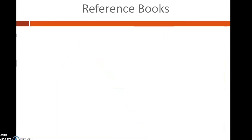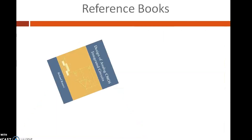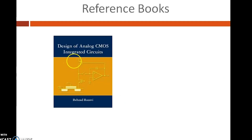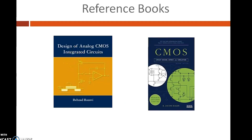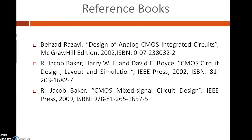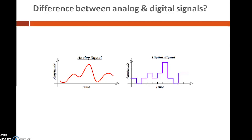The reference books for the course are: Design of Analog CMOS Integrated Circuits by Behzad Razavi, and CMOS Circuit Design, Layout and Simulation by R. Jacob Baker. The figure shows the basic difference between an analog and digital signal. As you learned in your signals and systems class, an analog signal is a continuous time, continuous amplitude signal, whereas a digital signal is a discrete time, discrete amplitude signal.